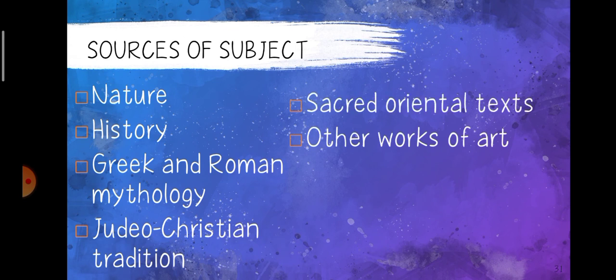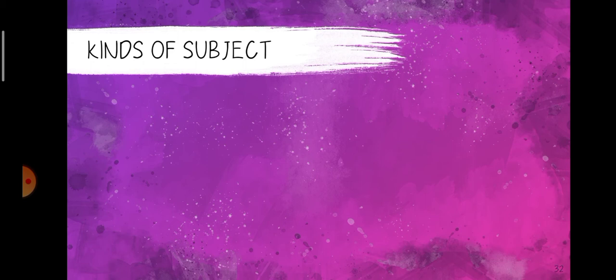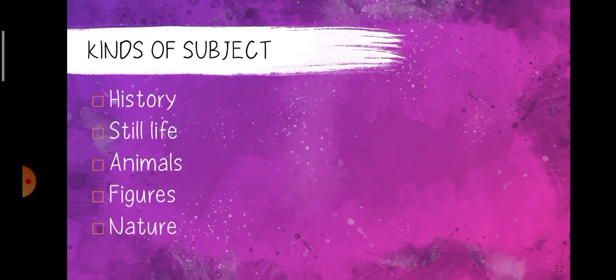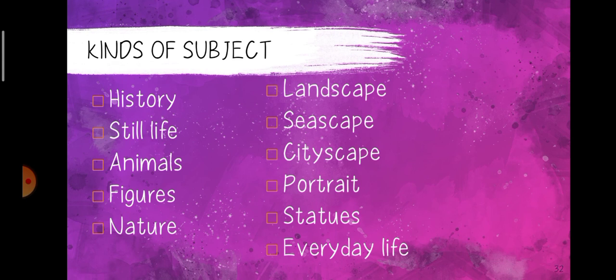You are the artist, so you decide what kind of subject to put into your artwork. These are possible sources of subject for those who find it hard to create a subject for representational work. Common sources include nature, history, Greek and Roman mythology, Judeo-Christian tradition, sacred oriental texts, and other works of art. Kinds of subject include history, still life, animals, figures, nature, landscape, seascape, and cityscape.